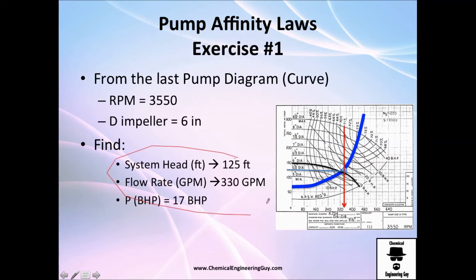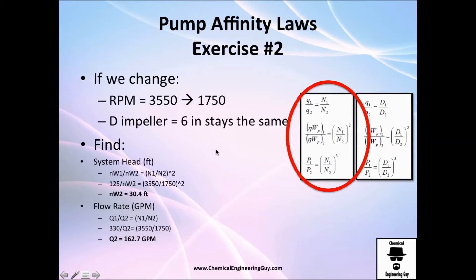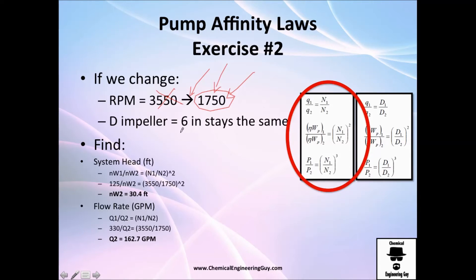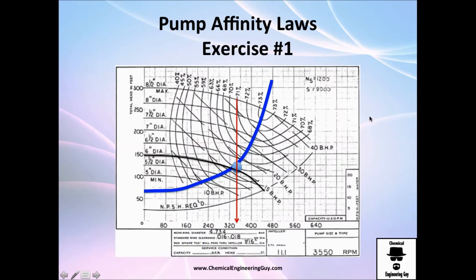Exercise 2: maybe because a motor failed, we need to change to a motor that can only deliver 1750 RPM; the impeller size stays the same. From the affinity equations, we have a problem because this diagram is only valid for 3500 RPM.